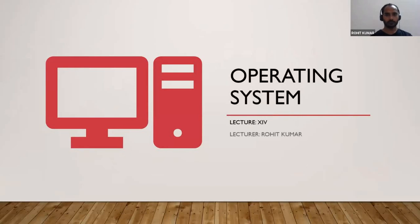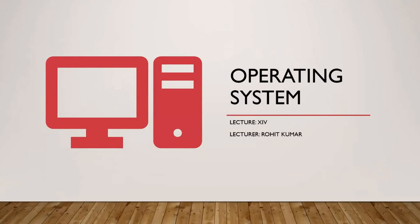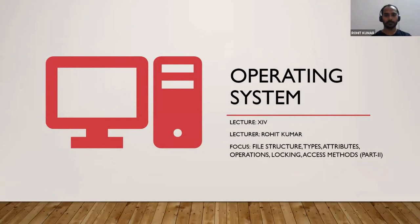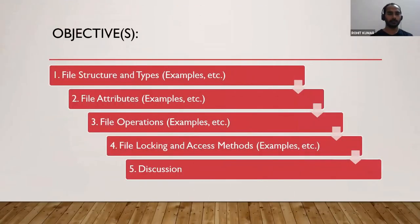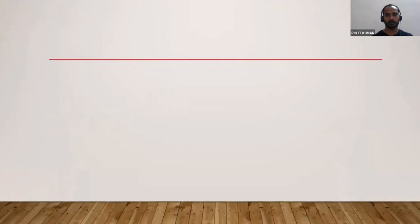This is the 14th lecture of operating systems. Today's focus is the second part of file structure: types, attributes, locking, and access methods. We are going to specifically cover examples of file types, the major attributes and operations, locking, and the access method. Then we will discuss some fine questions related to all these concepts.